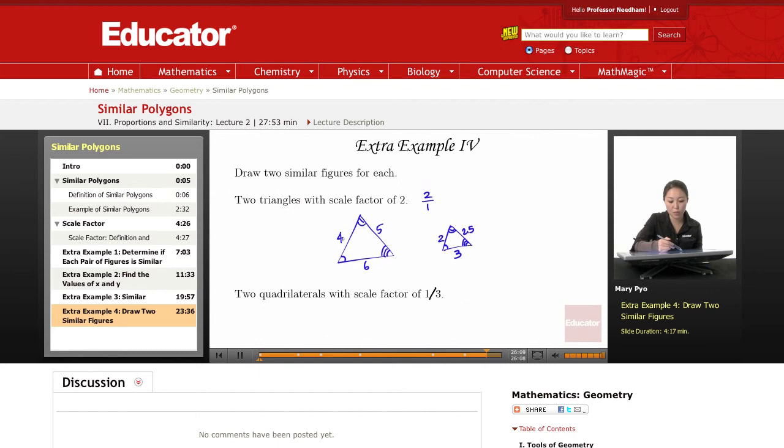So if you look at the ratio of each of their sides, they're all going to be 2 over 1. Now, the next one. Two quadrilaterals with a scale factor of 1 to 3.